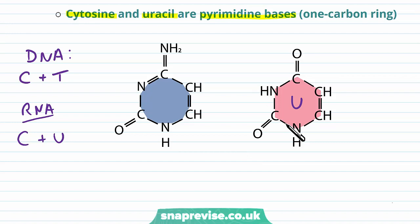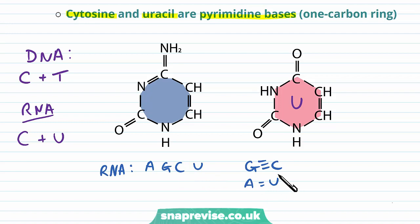The complementary base pairing still works in the same way. In RNA we have the bases A, G, C, and U — G still binds to C, but A instead of binding to T now binds to U, so A binds to U. In DNA we had A, G, C, and T, where G is still bound to C, but A bound to T instead. So all that's changed is that U replaces T for RNA.